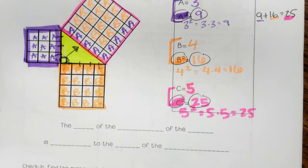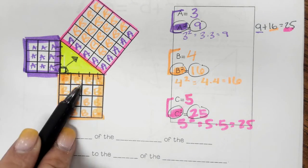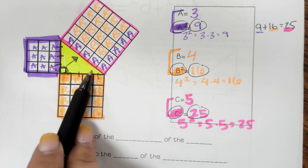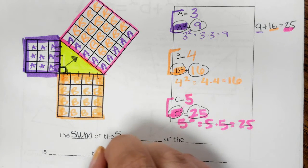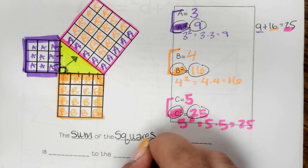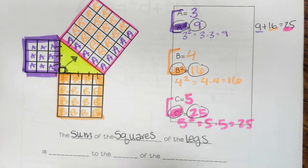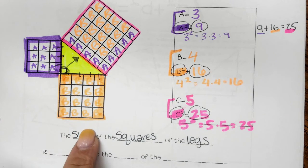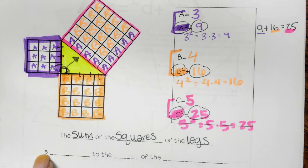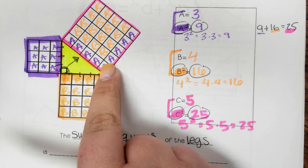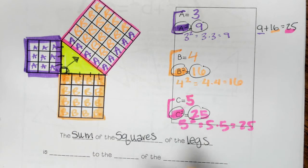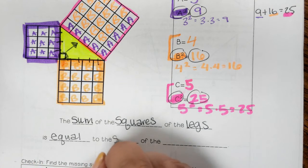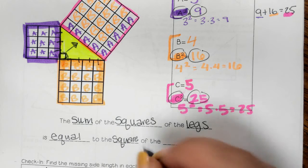Let's put that into words. Since we're adding two things together, I'm going to call that a sum. This is the sum of this leg squared and this leg squared. So: the sum of the squares of the legs equals the square of the hypotenuse.